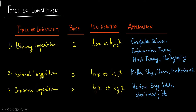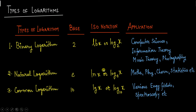Natural logarithm appears frequently while solving engineering problems. The third and most common type is common logarithm, where the base is 10. The ISO notation is lg x, or log x to the base 10. While we were familiar with ln x and log x, lb x and lg x are newer notations. Common logarithm has wide applications in various engineering fields including spectroscopy.